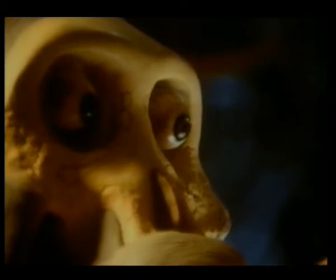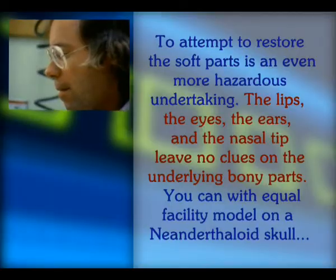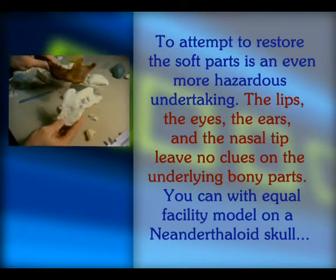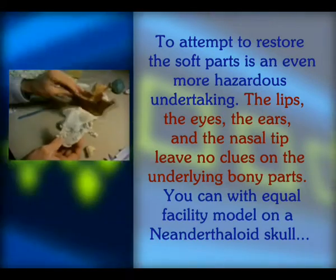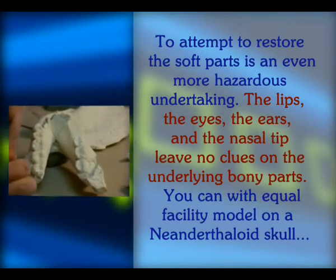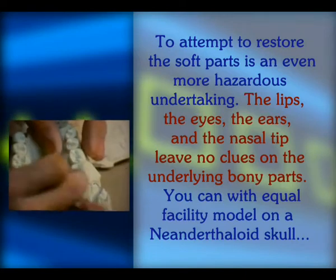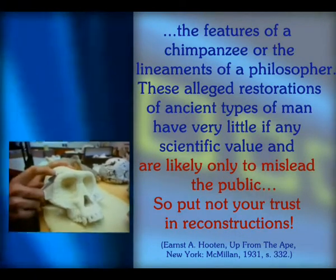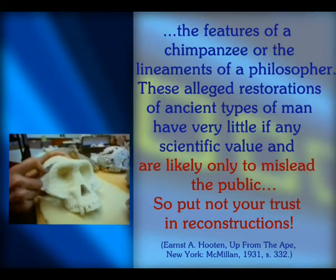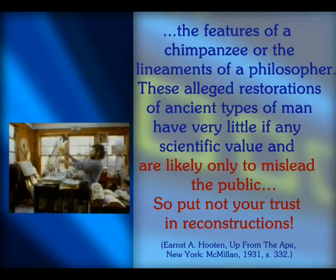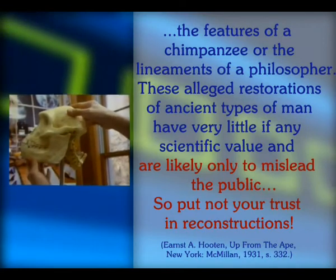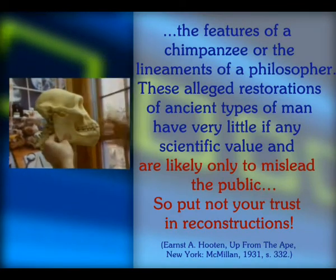Ernst Hutton from Harvard University explained the situation like this: 'To attempt to restore the soft parts is an even more hazardous undertaking. The lips, the eyes, the ears, and the nasal tip leave no clues on the underlying bony parts. You can with equal facility model on a Neanderthaloid skull the features of a chimpanzee or the lineaments of a philosopher. These alleged restorations of ancient types of men have very little, if any, scientific value and are likely only to mislead the public. Put not your trust in reconstructions.'